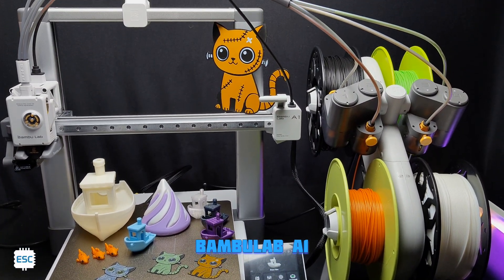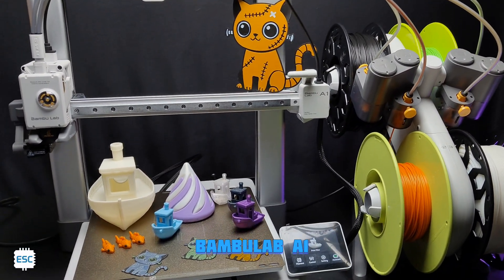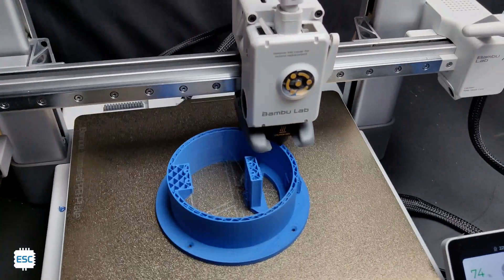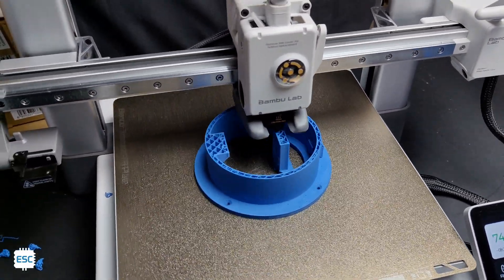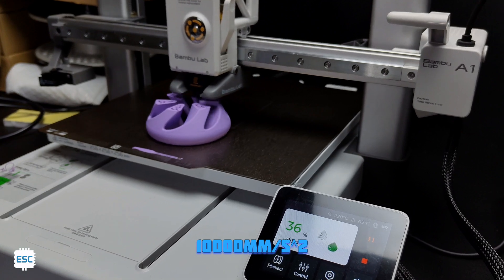Yes, it can print multicolor models with the help of AMS or Automatic Material System. The A1 can print up to a speed of 500 mm per second and reach up to 10,000 mm per second square acceleration.